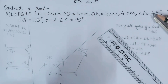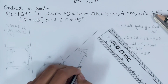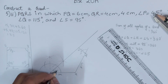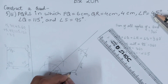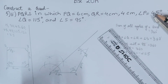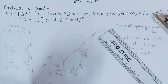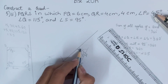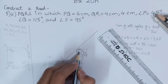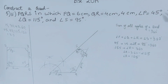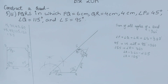We have finished the figure. QR is 4 centimeters, angle P is 45 degrees, angle Q is 115 degrees, angle R is 105 degrees, and angle S is 95 degrees. The point formed is S — make sure you label everything correctly. Friends, this is all for today. If you are new to my YouTube channel, do not forget to subscribe and leave a like. Till then, take good care of yourselves, bye.